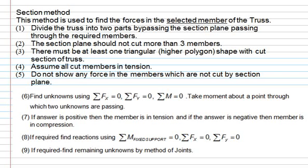Yesterday we discussed the method of sections for truss analysis. In the section method, we can find out the force in selected members of the truss. You have to follow the procedure: use one section plane and divide the truss into two parts by passing the section plane through the required members.